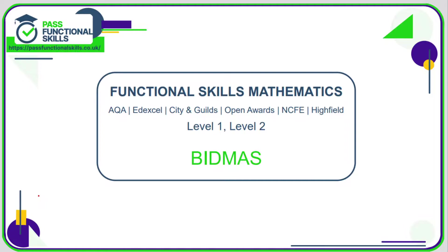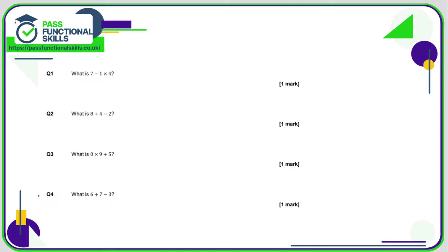Let's take a look at the BIDMAS questions — these are all no-calculator questions. First, what is 7 minus 1 multiplied by 4? The word BIDMAS tells us the order of operations. Here we have subtraction and multiplication, so we do the multiplication first: 1 times 4 is 4, so the question becomes 7 take away 4, giving the answer 3.